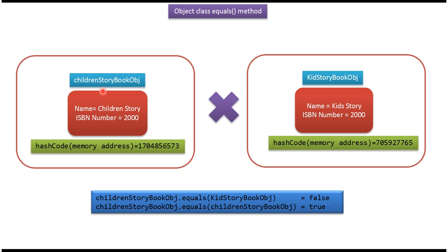Here you can see the children's storybook object. It has two fields: name and ISPA number. Name is 'children's story' and ISPA number is 2000. Here you can see the kids storybook object. It also has two fields: name and ISPA number. Name is 'kids story' and ISPA number is 2000.